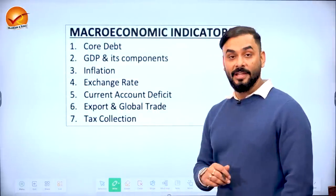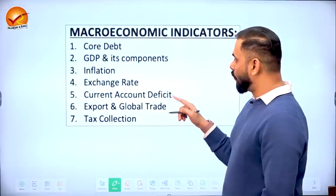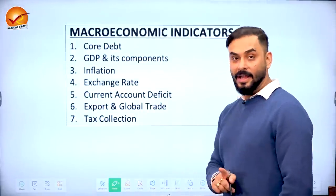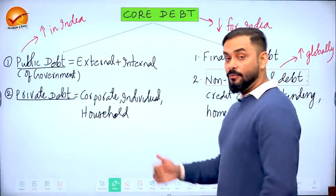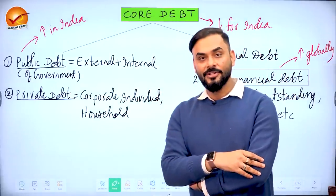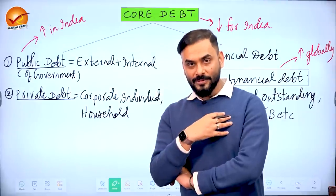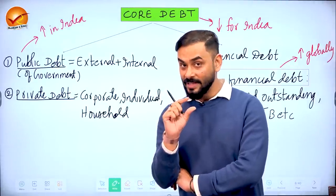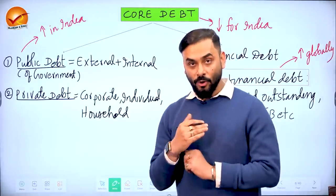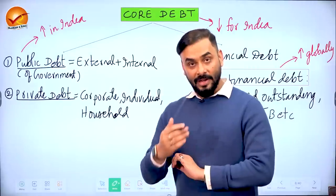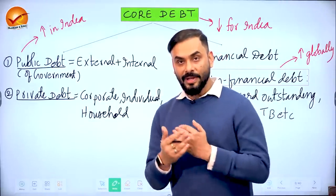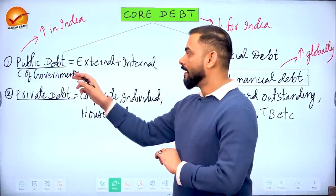Now let's look at macroeconomic indicators: debt, GDP components, inflation, exchange rate, current account deficit, exports, global trade, and tax collection. What is debt? When we take a loan that must be returned, that's debt. In an economy, two entities can take debt: government (public debt) and private entities like companies and individuals (private debt).